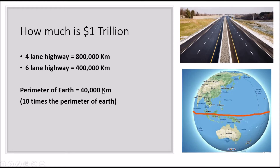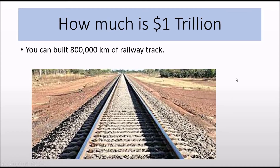The perimeter of the Earth is around 40,000 kilometers. So with 1 trillion dollars, you can build a six-lane highway that is 10 times larger than the perimeter of the Earth. You can also build 800,000 kilometers of railway track — imagine how long that would be!